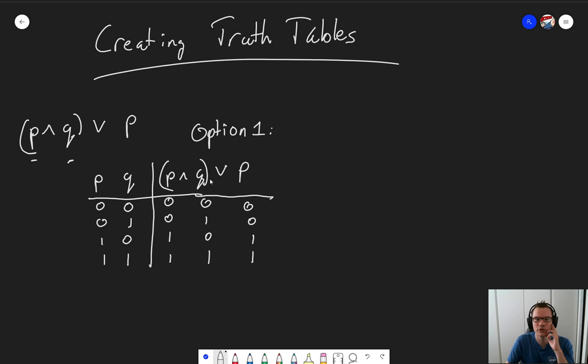And now we take a look at each of the operators in turn, starting with the AND here, and we start with the AND because it's between the parentheses. P and Q, 0 and 0 is 0, 0 and 1 is 0, 1 and 0 is 0, and 1 and 1 is 1.